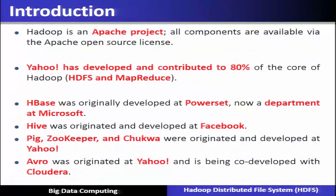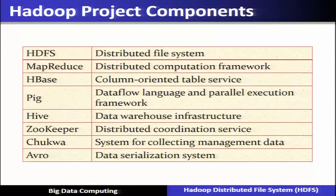Hadoop is an Apache project; all components are available via Apache open source license. Yahoo developed and contributed 80 percent of the core of Hadoop—that is, HDFS and MapReduce. HBase was originally developed at PowerShell, now at Microsoft. Hive was originated and developed at Yahoo. The foremost component is HDFS, the Hadoop Distributed File System, and the other important component is MapReduce, the distributed parallel computation framework.